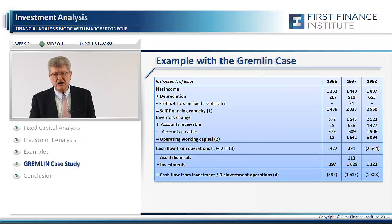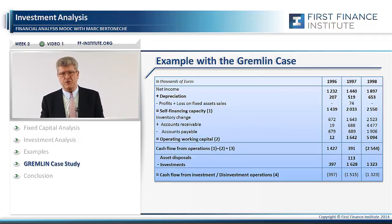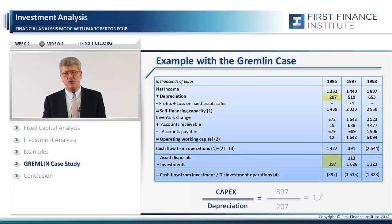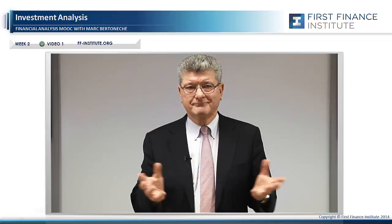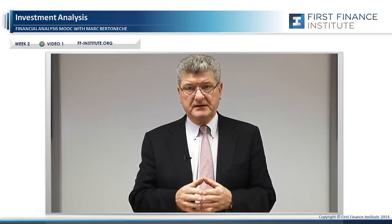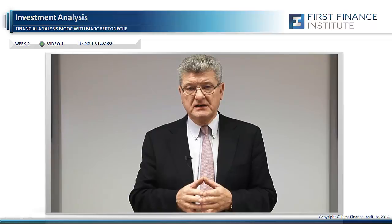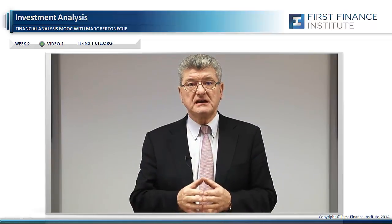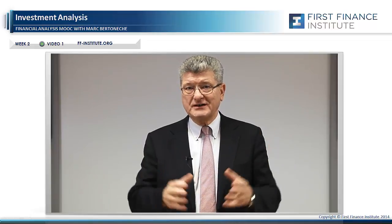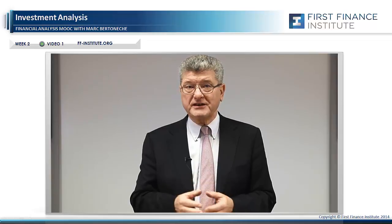If we now apply these measures to Gremlin, our fast-growing company in the video game business, you see that the ratio is well above one — almost two in 1996, more than three in 1997, and more than two again in 1998. The second type of investment the company needs to make is the change in net working capital, and we are going to review it in the next three videos. See you in a few moments on the second video of week two.